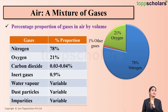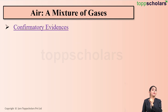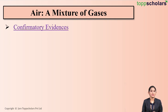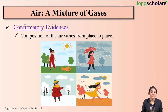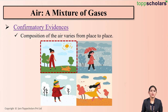Now, as we said that air is a mixture of gases, there are many confirmatory evidences which confirm that air is a mixture of gases. The first evidence is that the composition of air varies from place to place. For example, in summer season, the rate of evaporation is quite high, and that is why we feel the hot climate.